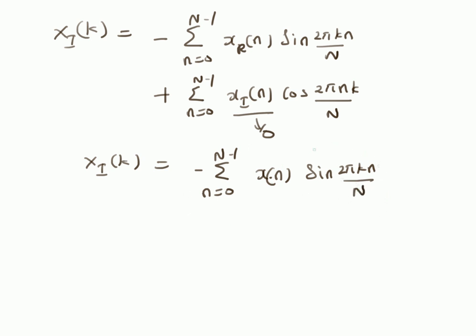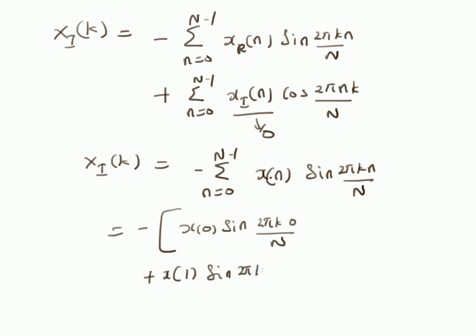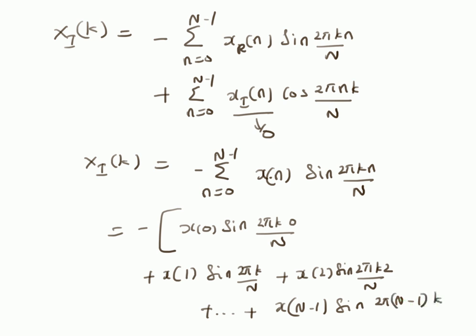Let us expand this summation. The first term is x(0) times sin(2πk·0/N), which is 0. Then the next terms are: x(1)·sin(2πk/N) + x(2)·sin(2π·2k/N) + ... up to the last term x(N-1)·sin(2π(N-1)k/N). So that is the expansion of this summation.